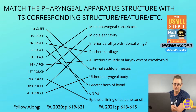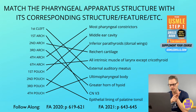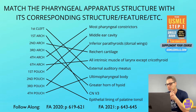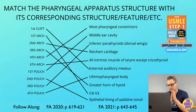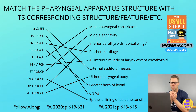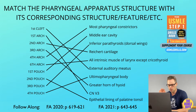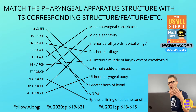The second arch has two arteries associated with it: the stapedial artery and the hyoid artery. The stapedial artery connects the embryonic precursors of the internal carotid, internal maxillary, and middle meningeal arteries, and will regress prior to birth. The hyoid artery gives rise to the corticotympanic artery in adults. Associated with the second arch is Reichert's cartilage, the cartilaginous component of the second arch.